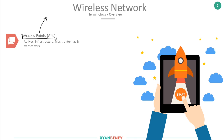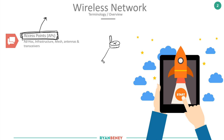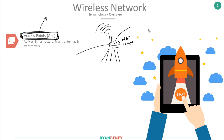An access point is normally called an access point when it's a dedicated device. Your home router, for example, is a router, a switch, and a wireless device all in one — it allows you to connect multiple devices, has wireless connectivity, performs functions like NAT and DHCP, and gives you connectivity to the LAN and to the WAN. This is normally something you have at home.